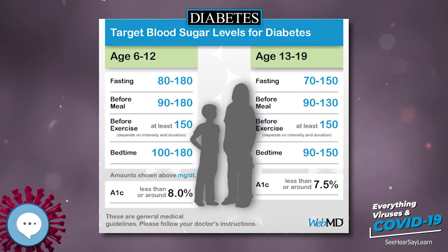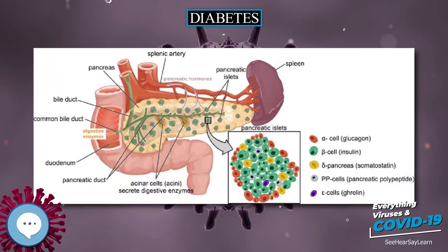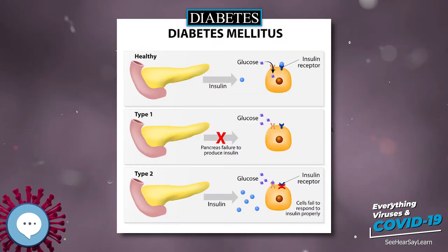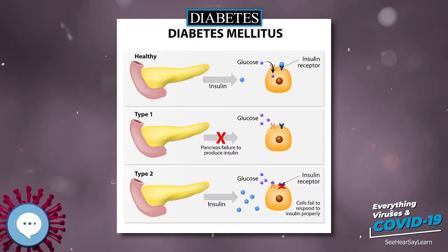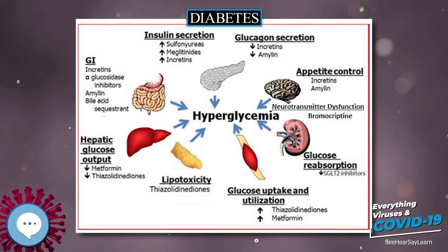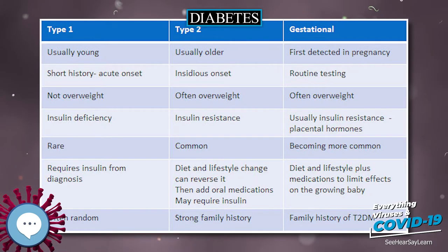Damage to the kidneys, known as diabetic nephropathy, can lead to tissue scarring, urine protein loss, and eventually chronic kidney disease, sometimes requiring dialysis or kidney transplantation. Damage to the nerves of the body, known as diabetic neuropathy, is the most common complication of diabetes.